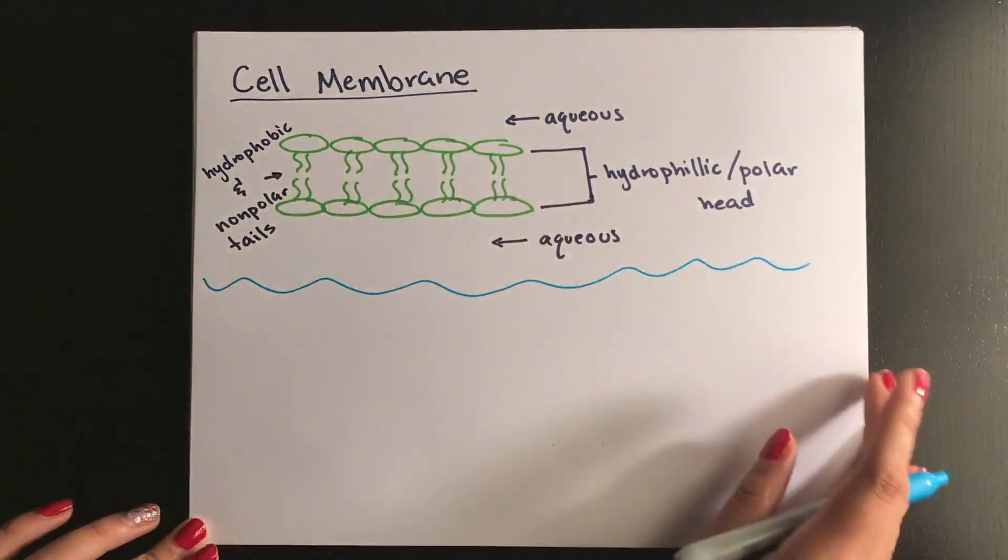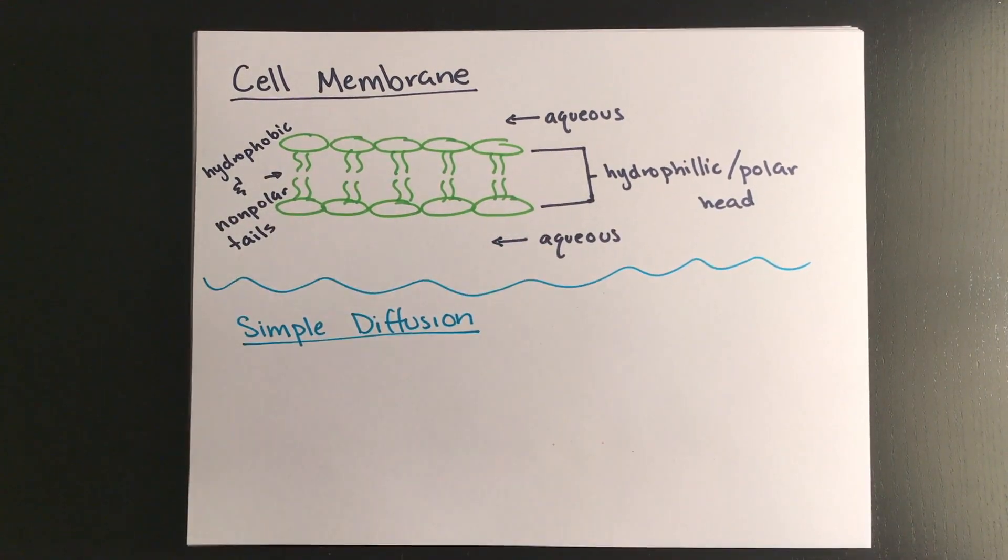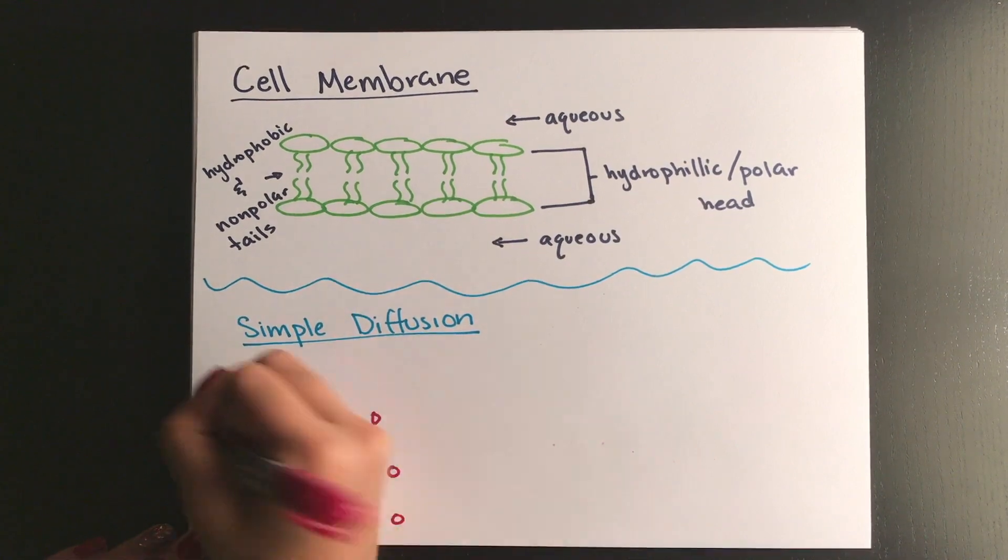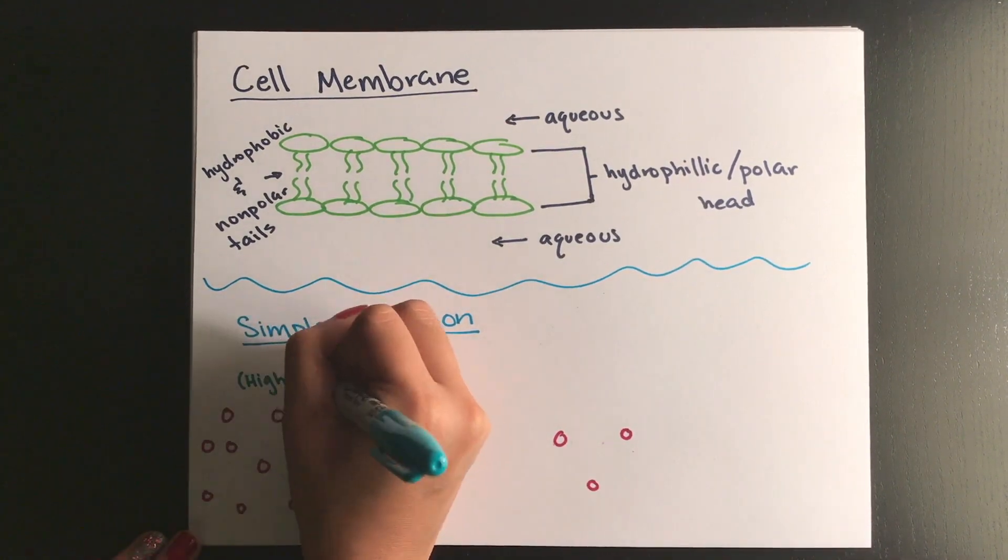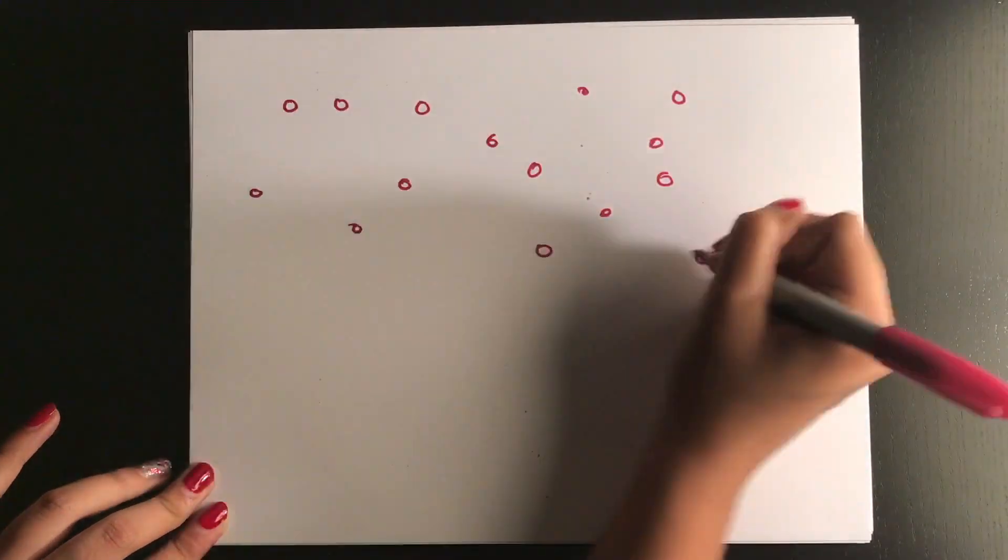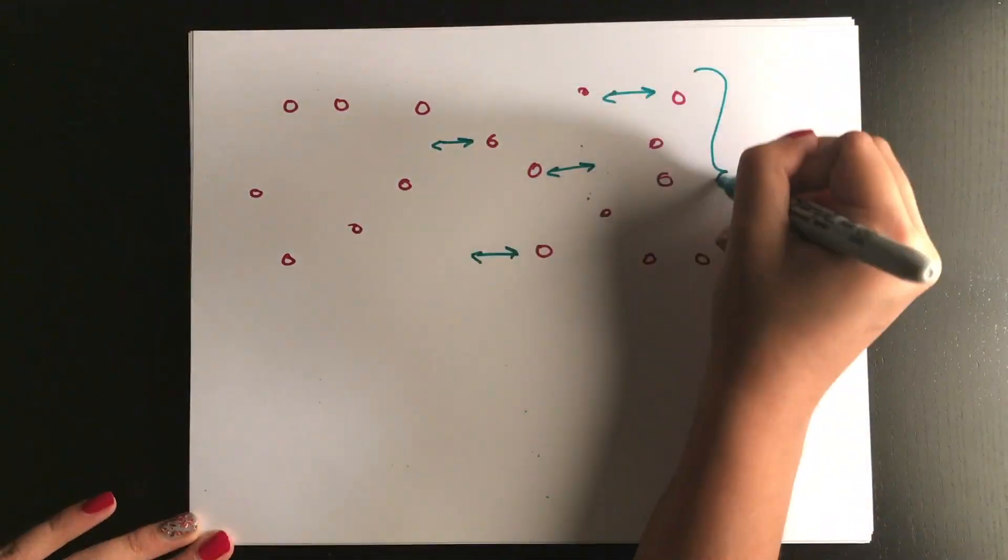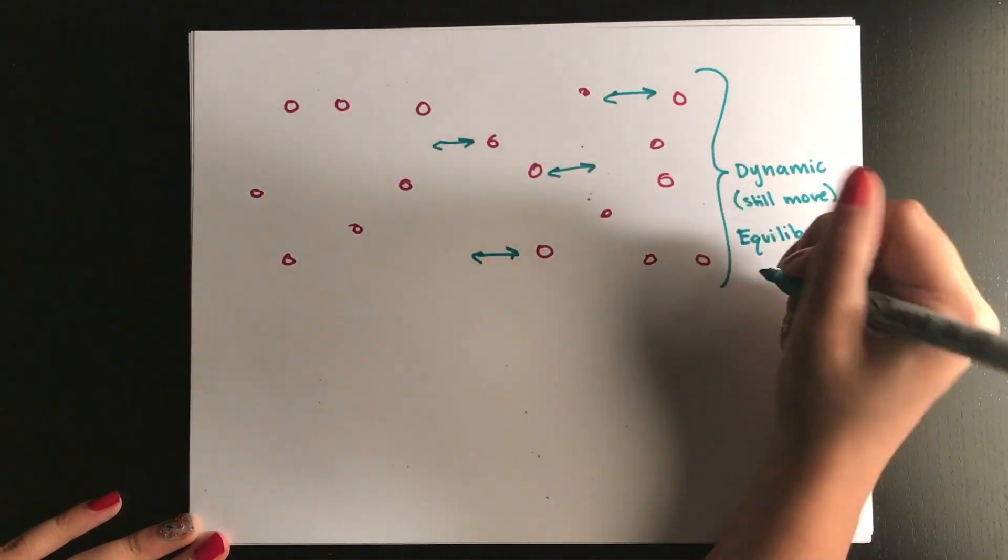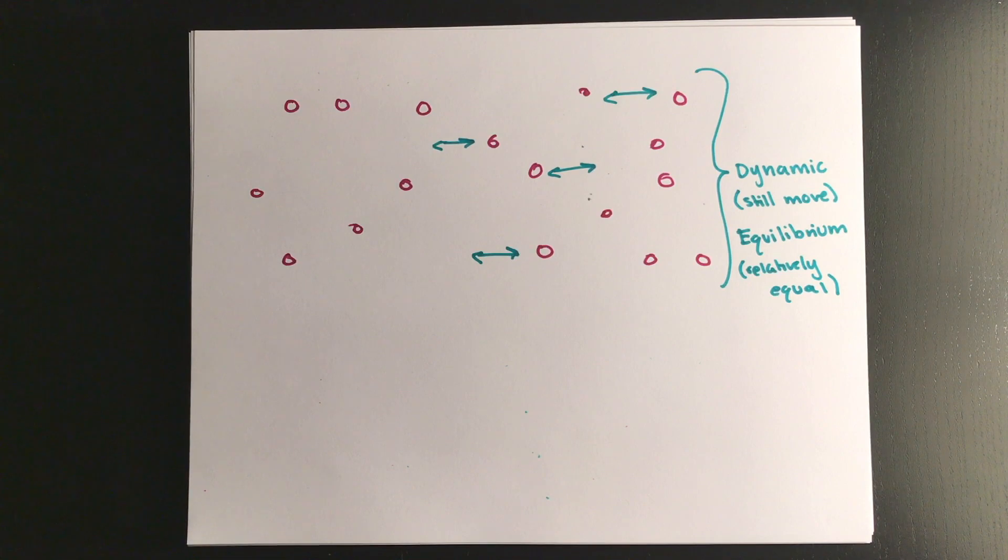Things can get inside the cell in four different methods. We'll start with simple diffusion. Simple diffusion is the movement of a substance from an area of high to low concentration until they reach dynamic equilibrium, which is essentially a state where things are still moving but it's relatively equal on whatever areas you're measuring. This method only works with hydrophobic substances that can interact with the cell membrane, such as oxygen, carbon dioxide, and cholesterol.